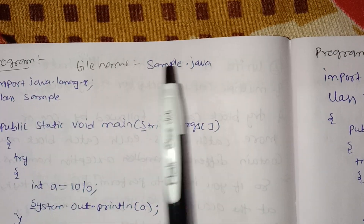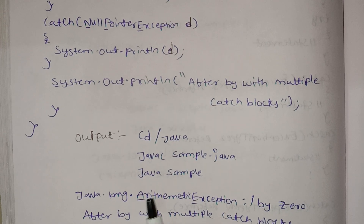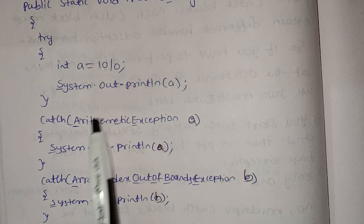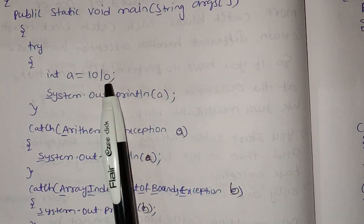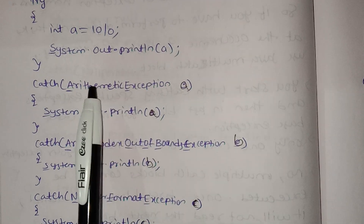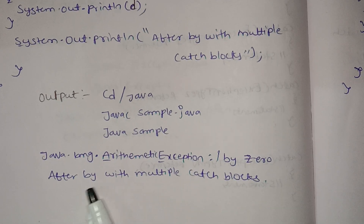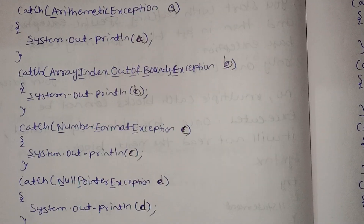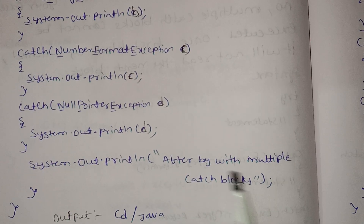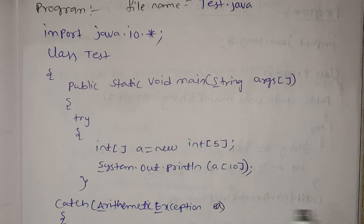The file name is sample.java. We compile using: javac sample.java. The output shows java.lang.ArithmeticException: / by zero. Here we have 10 / 0, which produces the arithmetic exception divided by zero. After this, we will use multiple catch blocks.